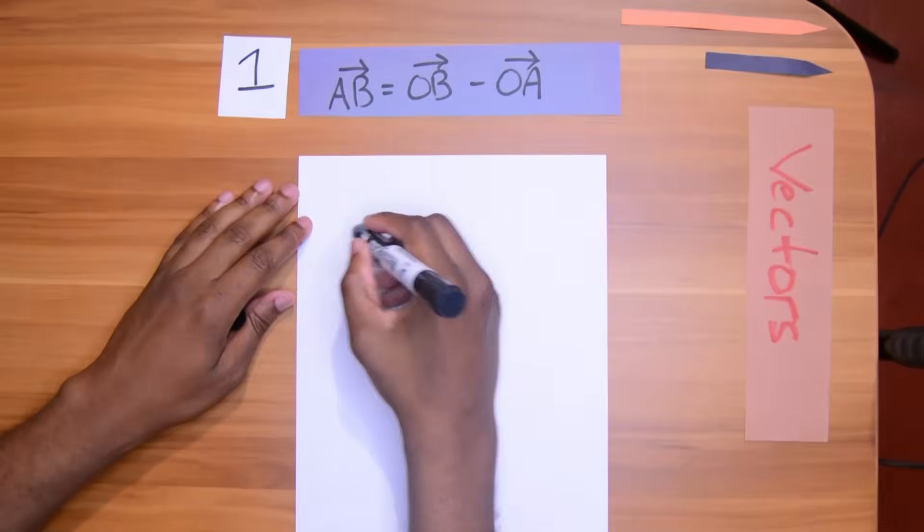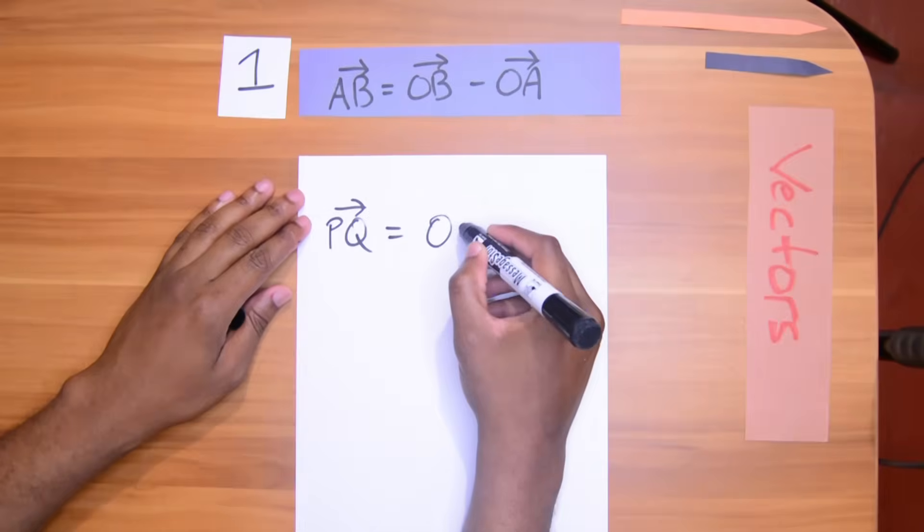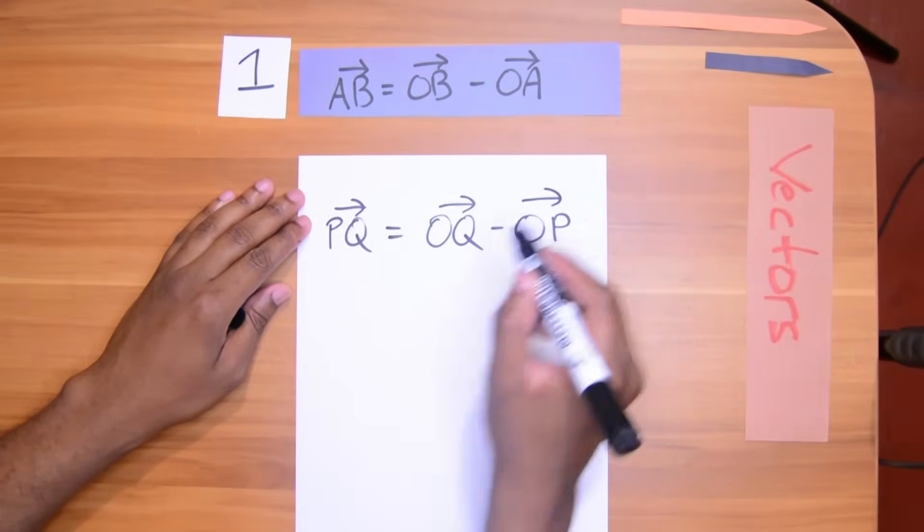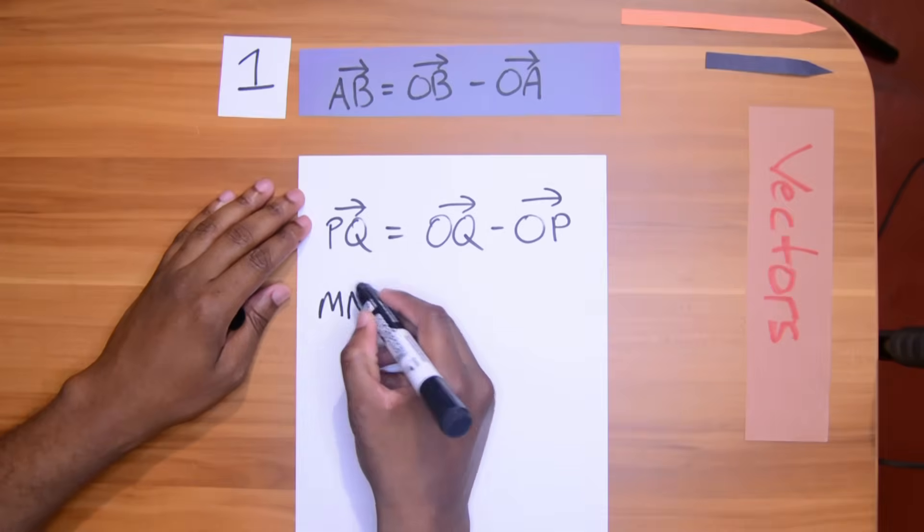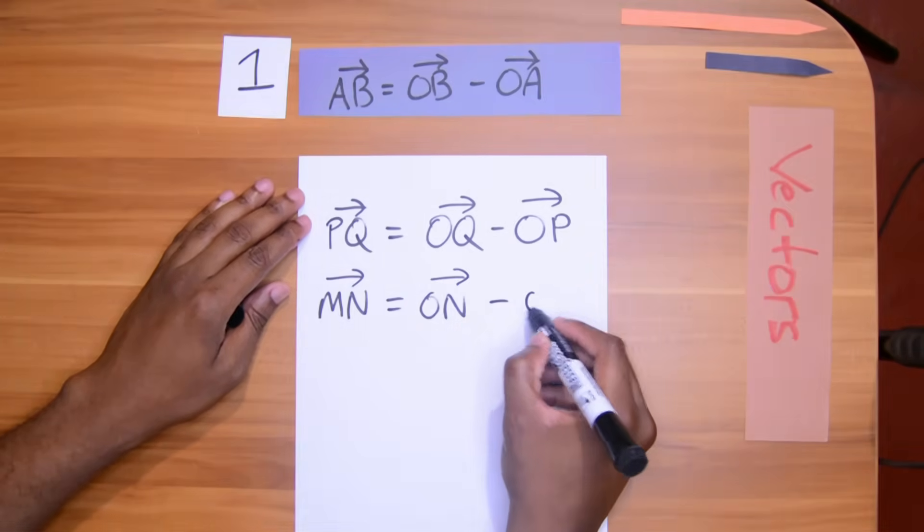One last quick tip with the triangle law. It doesn't always come as AB. It can come as PQ. This will simply be OQ take away OP. It can come as MN, which will be ON take away OM.